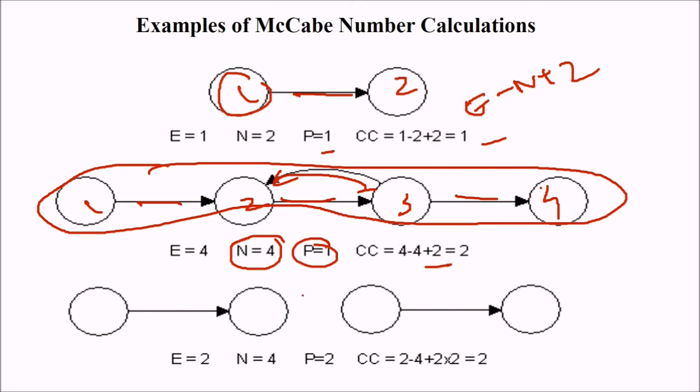And what about this? We have P as 2 because these 2 are different. There is no connection between them. How many edges are there? 1, 2. 2 edges. How many nodes? 1, 2, 3, 4. 4 nodes. E minus N plus 2. P is 2, so that is around 2. So this was all about cyclomatic complexity. Thank you so much.